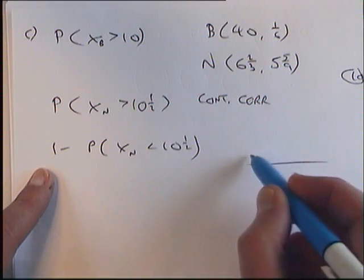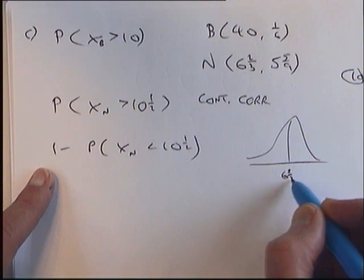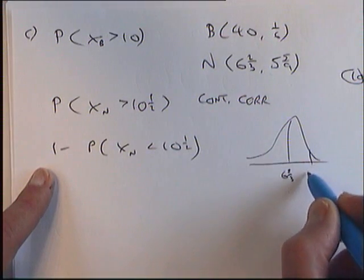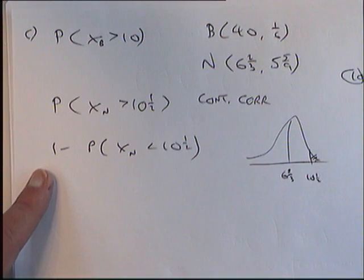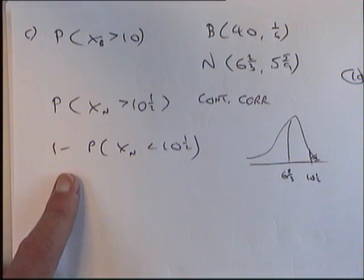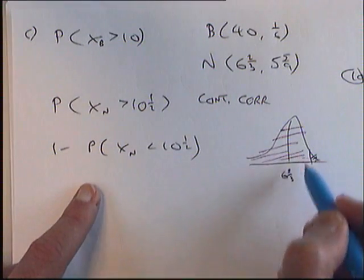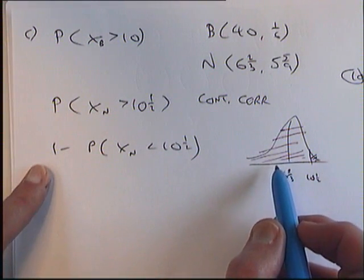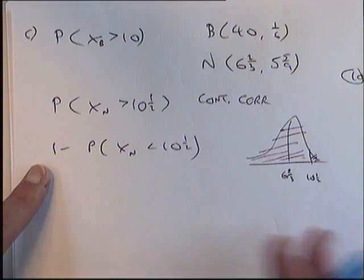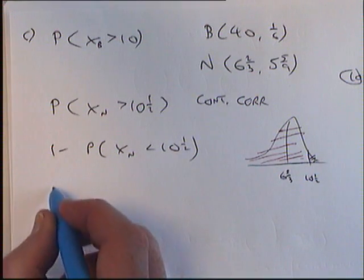If we just do a drawing: I've got a mean of 6 and 2 thirds, and I want it more than 10.5, which is this small area over here. I'm actually going to work out, because I'm using the tables, the big area which is less than 10.5, and subtract that from 1. So if you're doing it with the tables, you turn it round into a less than form. It doesn't really matter which way you're doing it — on the graphics calculator or on the tables.